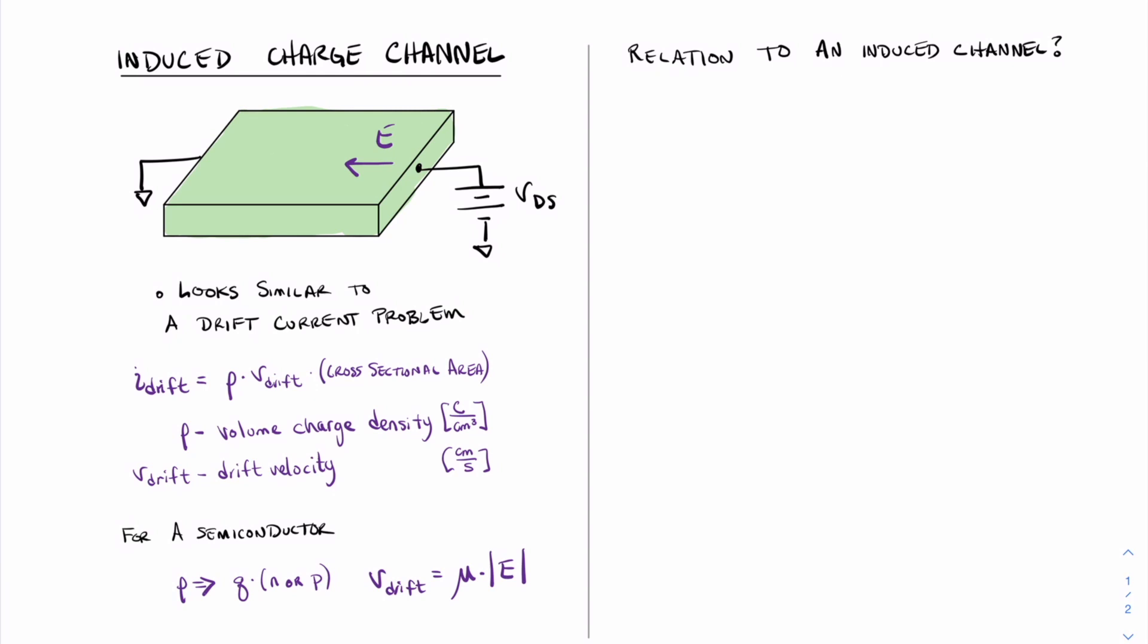So how does the idea of drift current from a semiconductor resistor problem relate to that of an induced channel? Well, it's very similar, actually. The only difference will be that instead of looking at carriers due to doping, we're going to look at induced carriers due to the voltage from gate to source or gate to body.